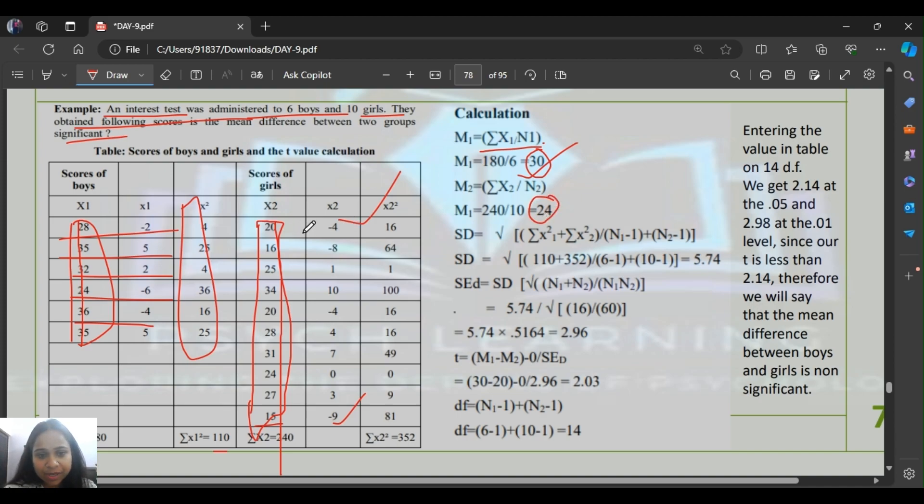Then we subtracted 24 from each value: minus 4, minus 8, minus 1, and wrote all values. Then we squared them and got the sum. Standard deviation formula: sigma x1 square plus x2 square by n1 minus 1 plus n2 minus 1. Here we have the values, and standard error of deviation is 2.96.